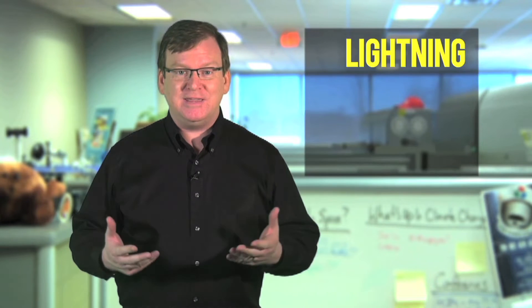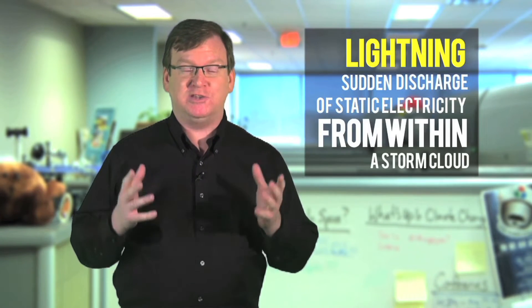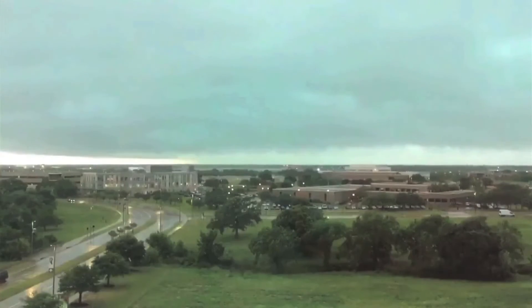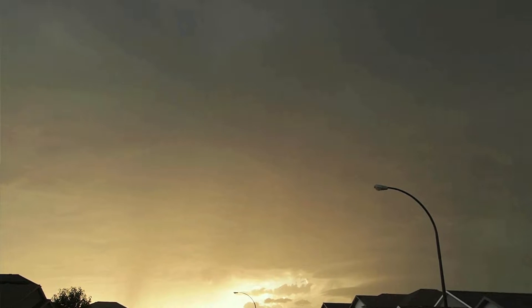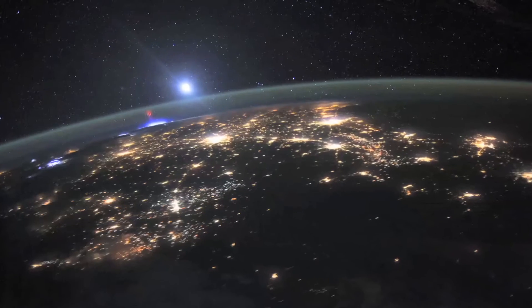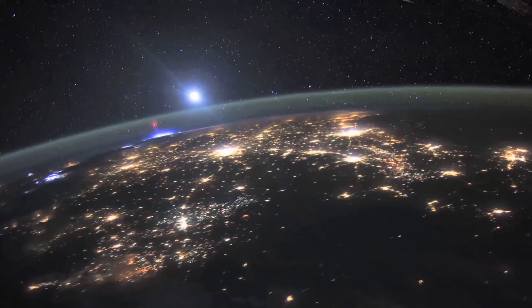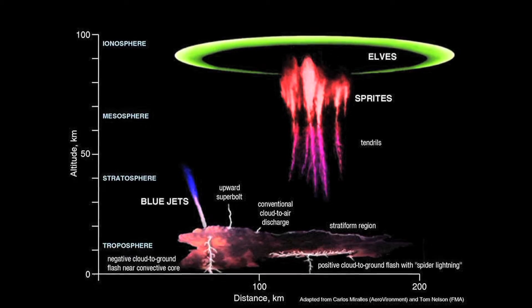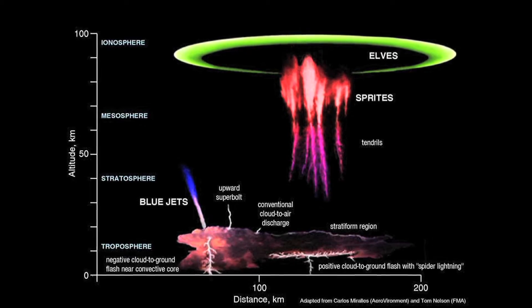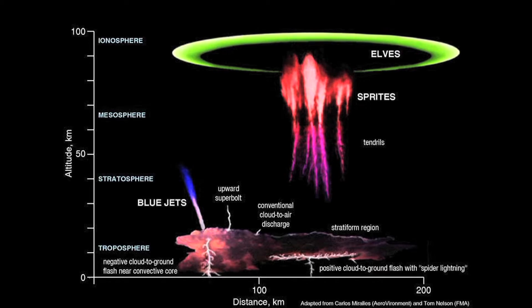Simply put, lightning is a sudden discharge of static electricity from within a storm cloud. The most common types we see are cloud-to-ground, intracloud, and cloud-to-cloud lightning. But there are many other types, including positive cloud-to-ground lightning, and rarer upper atmospheric transient luminous events known as blue jets, red sprites, and elves.